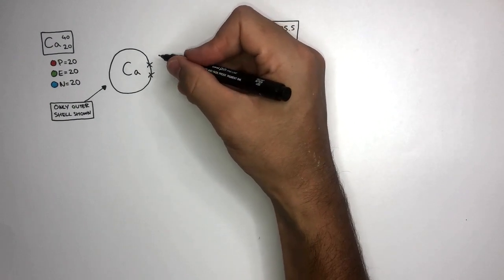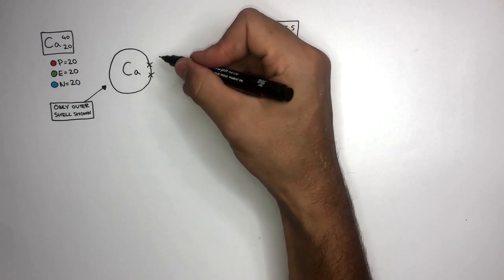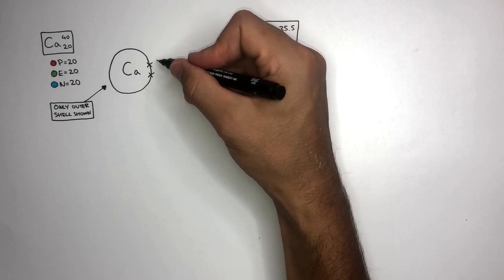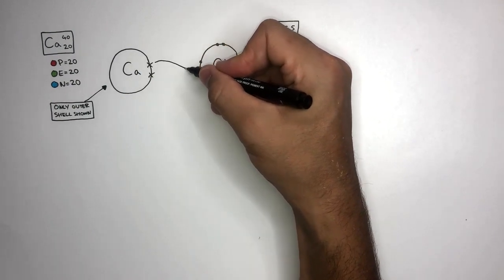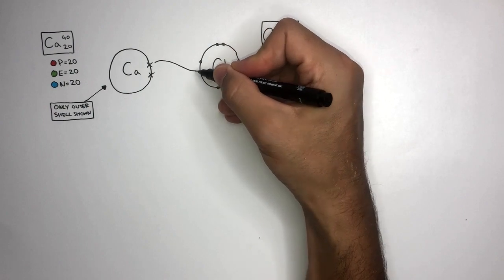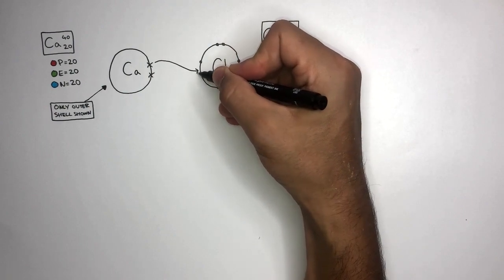Calcium needs to lose two electrons, and the Chlorine atom needs to gain just one of those two electrons. This shows the Calcium atom losing one of its electrons, and Chlorine gaining that same electron.